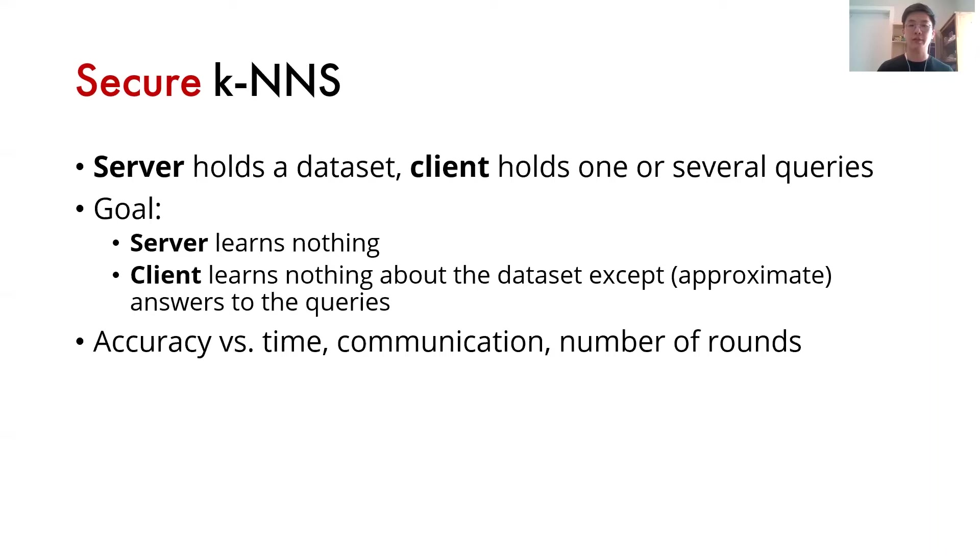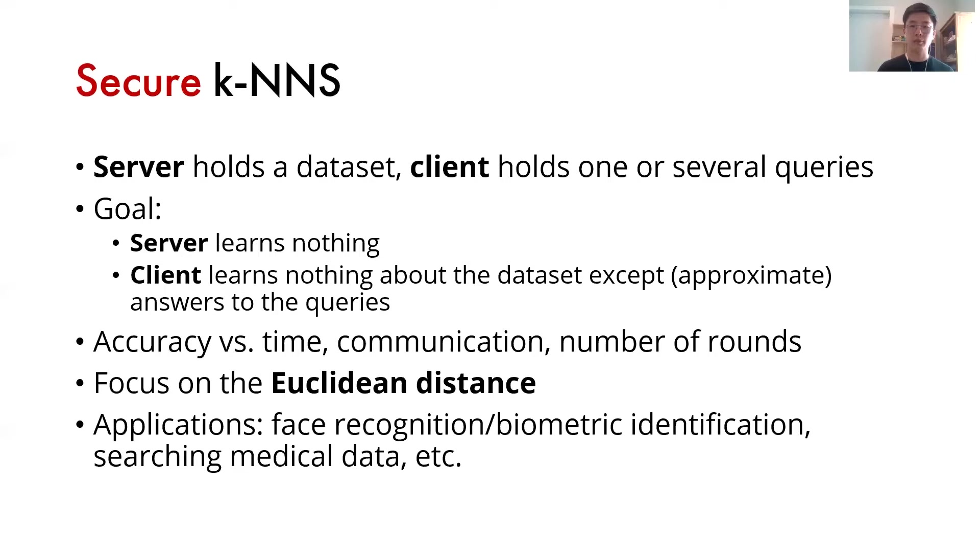To consider the secure k-nearest neighbor problem for efficiency, we often look at multiple factors such as accuracy, time, communication cost, and number of rounds. For this work, we focus on the Euclidean distance. Applications include secure face recognition, biometric identification, searching for medical data, etc.